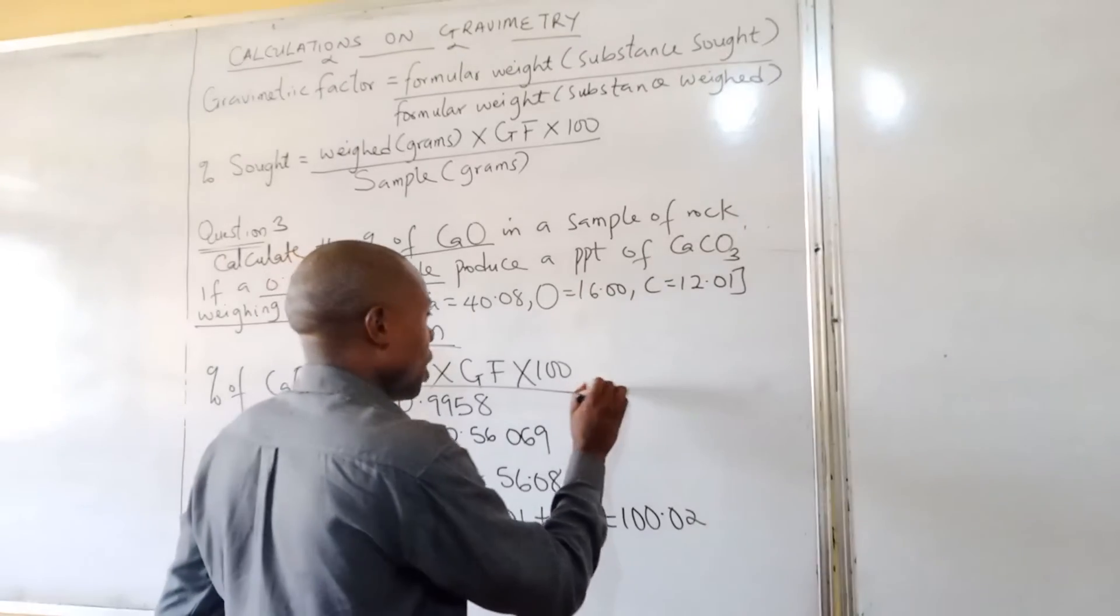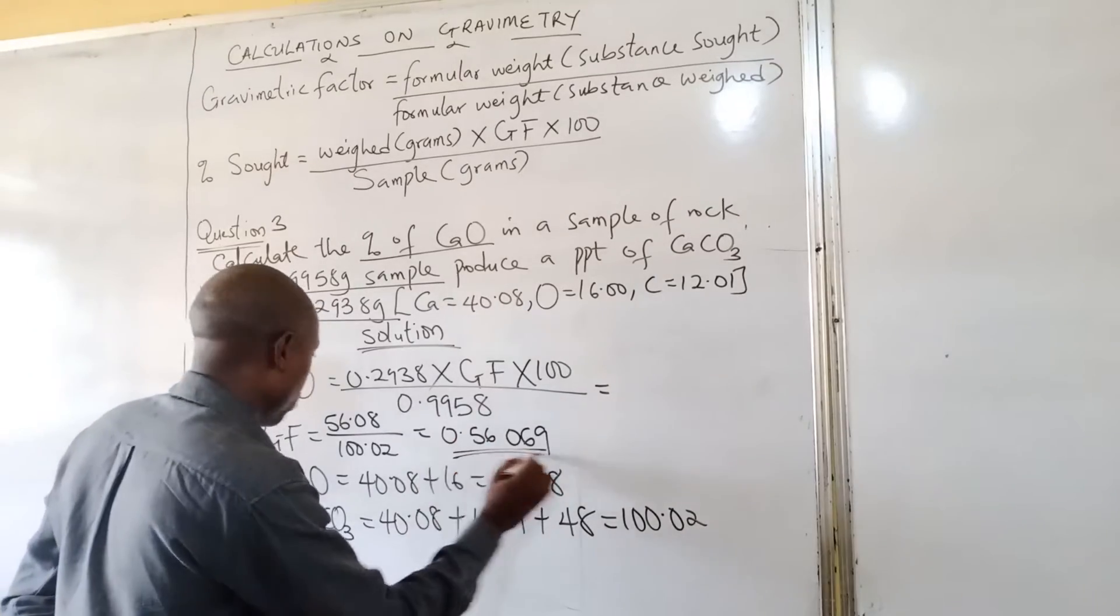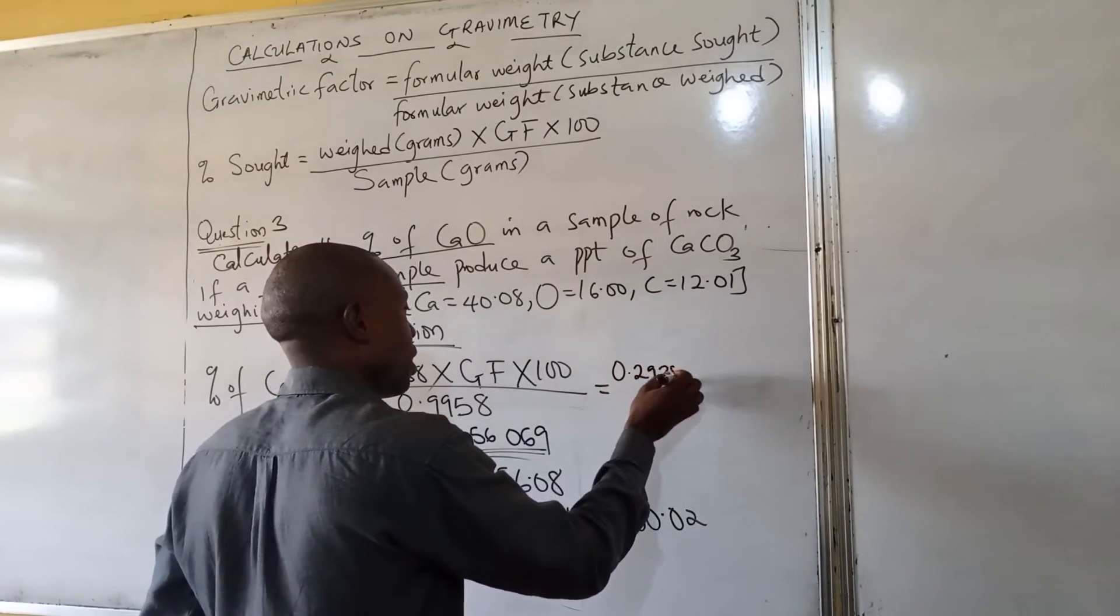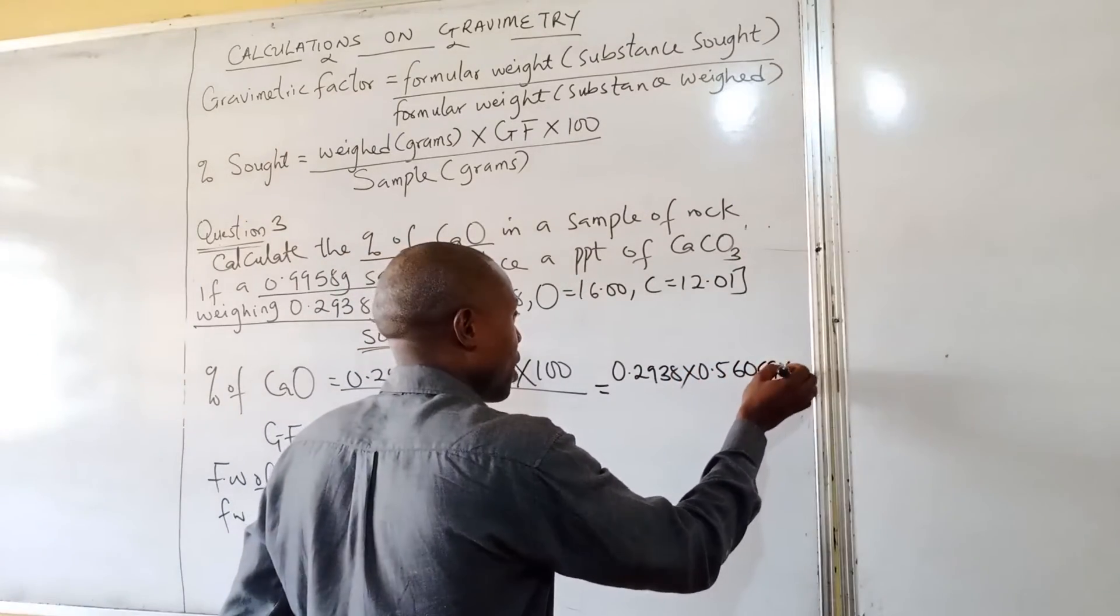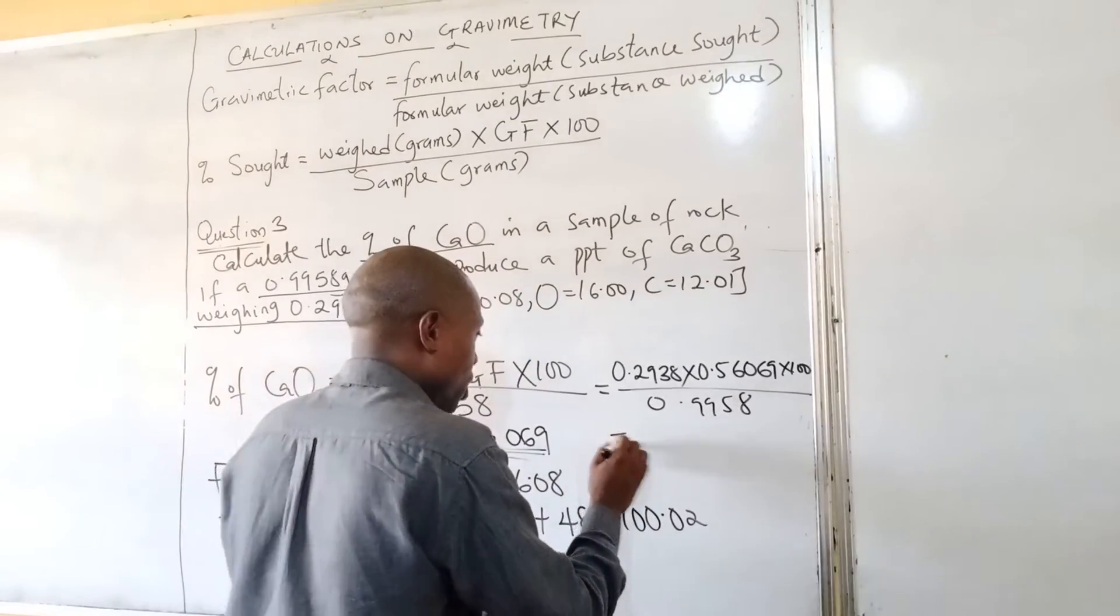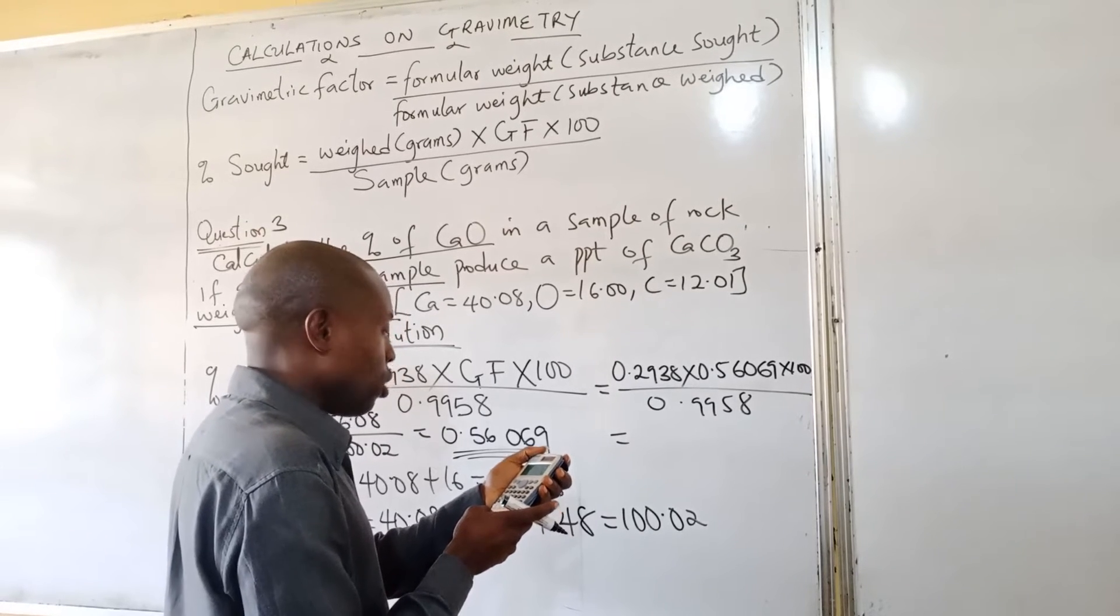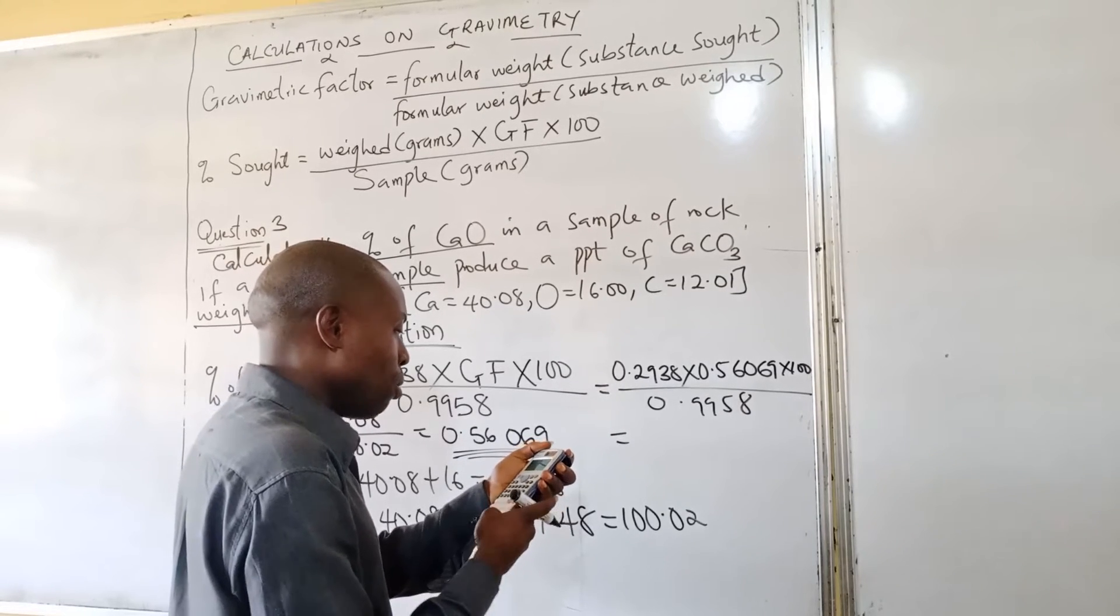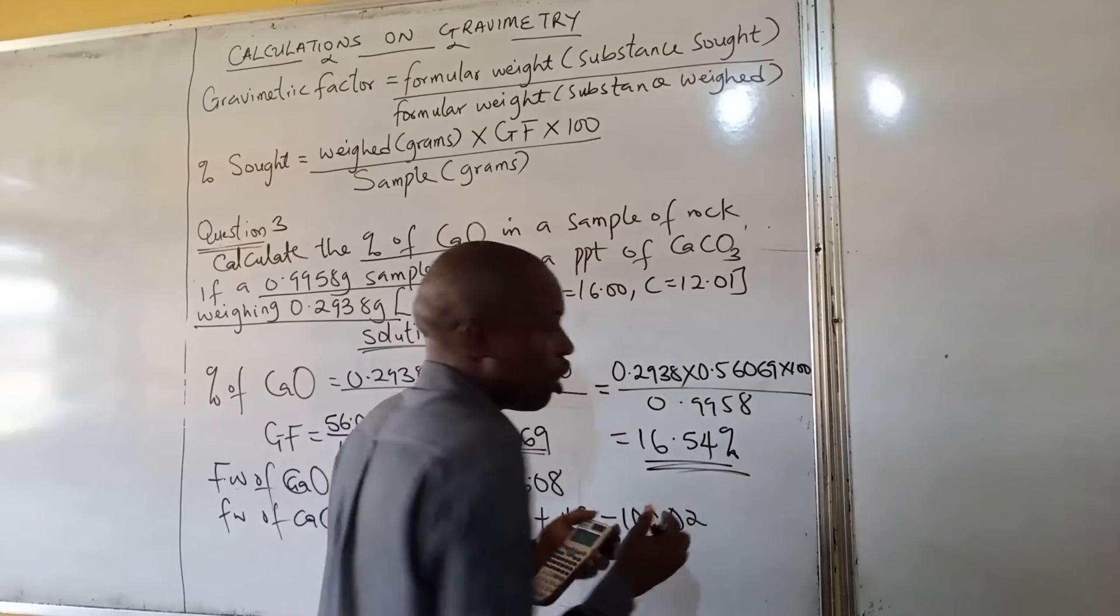So we calculate. Here is percent equal to. So in place of the gravimetry factor now, we put this data. Then I become 0.2938 multiplied by 0.56069 times 100 over 0.9958. When I do my multiplication and division, I should be having my answer to be 16.54 percent in two decimal places.